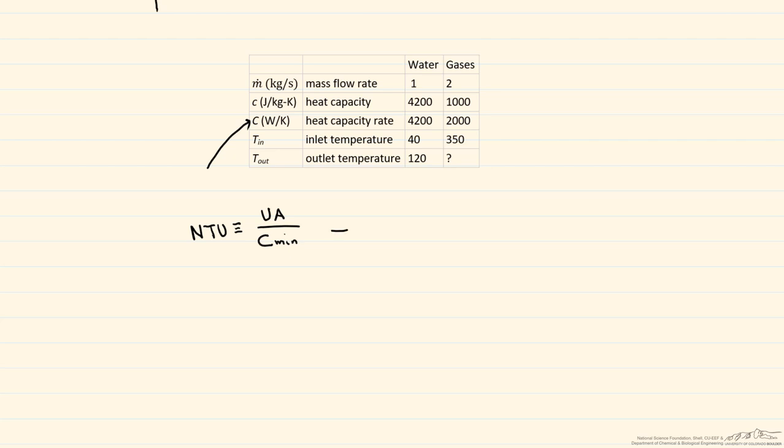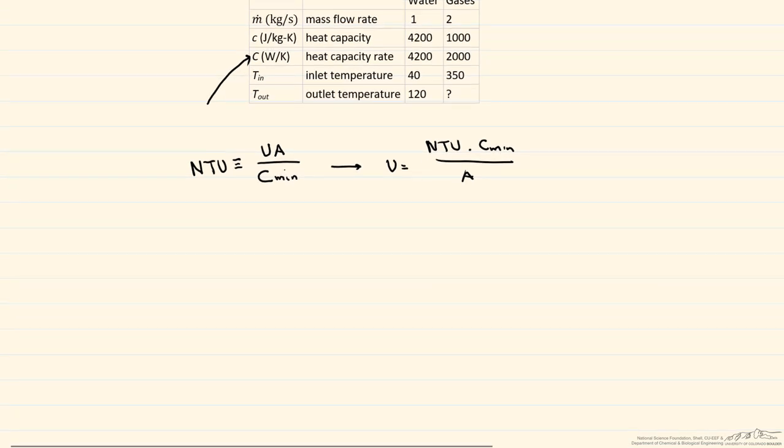So we're trying to find U. Let's rewrite it this way. Our U equals NTU times our C_min divided by the area, which is what we're given. So we can determine the minimum heat capacity rate by consulting this table above.